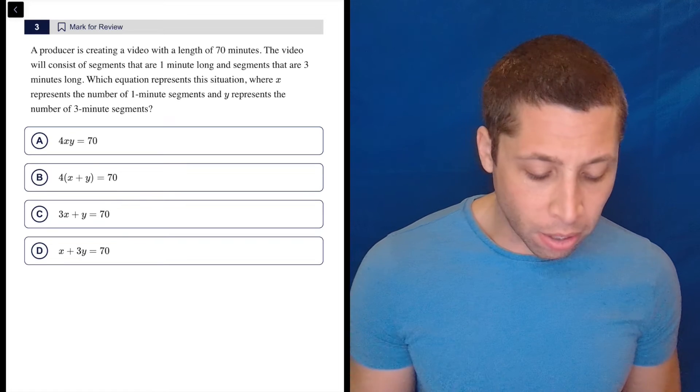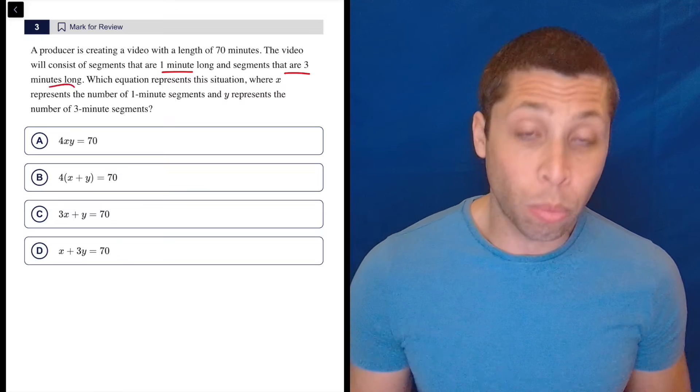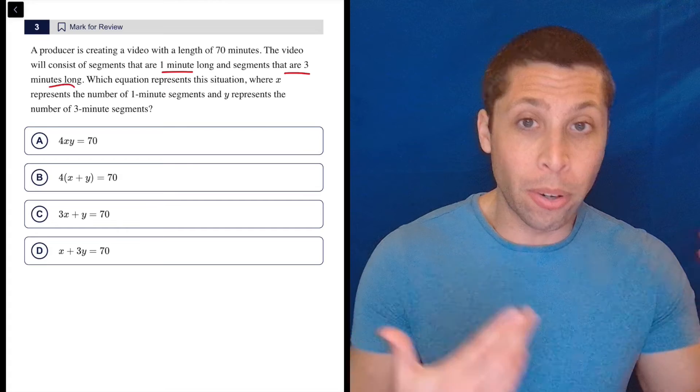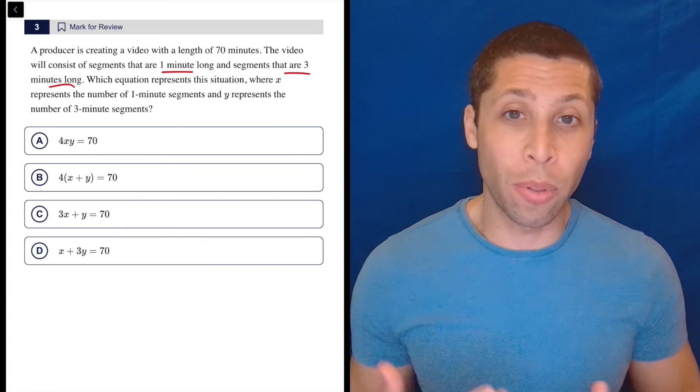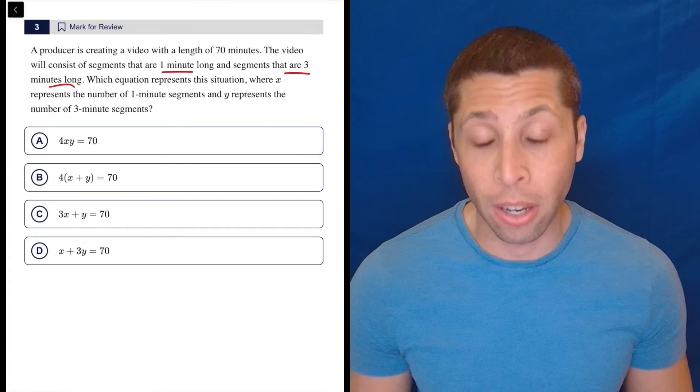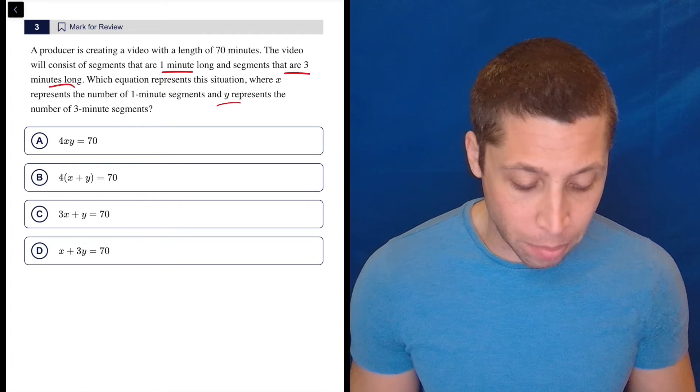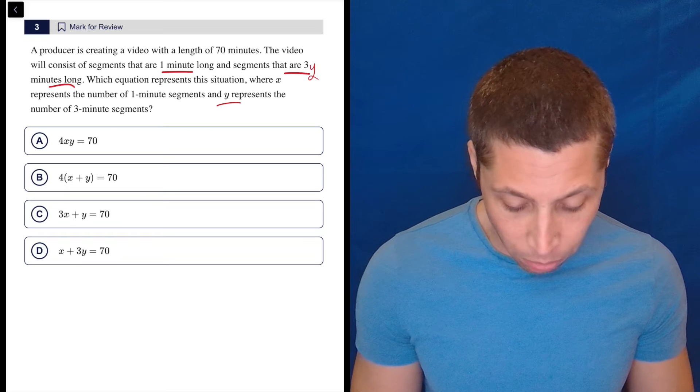So when they are giving us this one and three, these are rates, right? So for every three minute long segment, we're going to kind of count another three. So this is something that looks like multiplication when we have an equation. So we're going to want to multiply three times the number of three minute segments, which is Y. So we're looking for a three Y here.